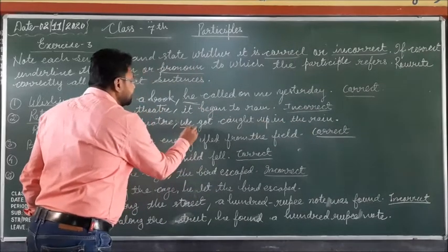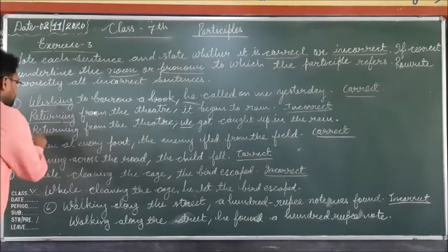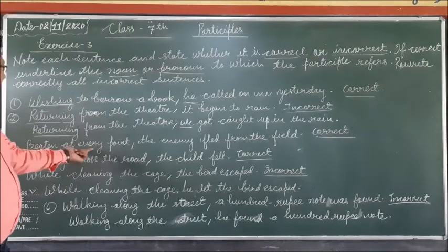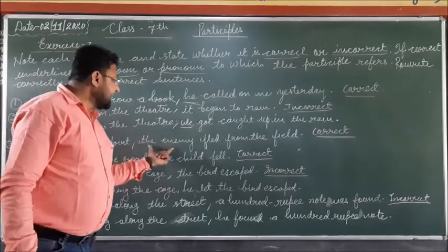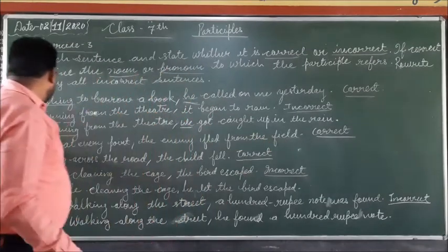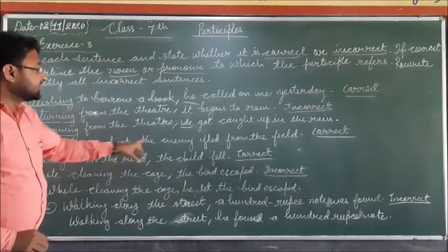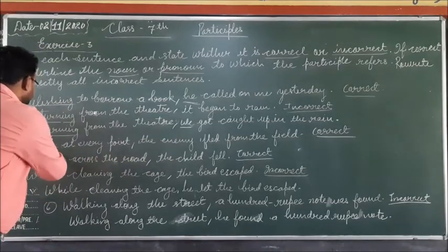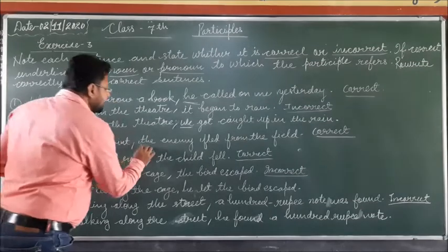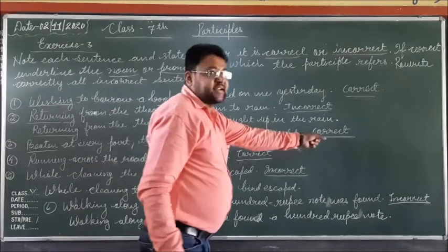In the corrected sentence, the participle 'returning' refers to 'we,' the pronoun. Next sentence: 'Beaten at every point, the enemy fled from the field.' Here 'beaten' is the participle, and it refers to the noun 'enemy.' So this is a correct sentence.